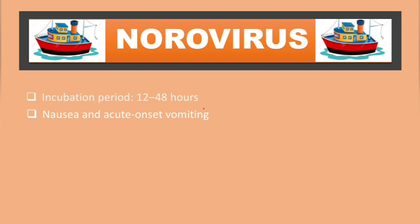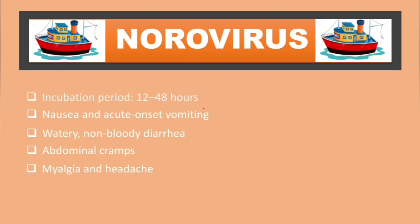The incubation period of Norovirus is usually 12 to 48 hours. Symptoms include nausea and acute onset vomiting, watery non-bloody diarrhea — sometimes referred to as explosive diarrhea — along with abdominal cramps, myalgia, and headaches.